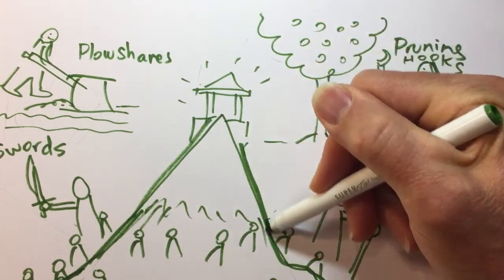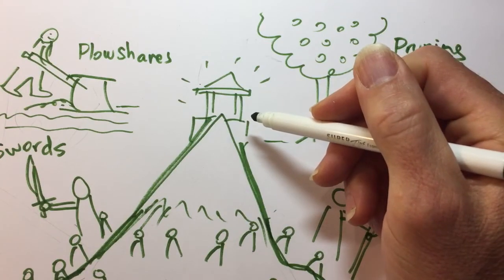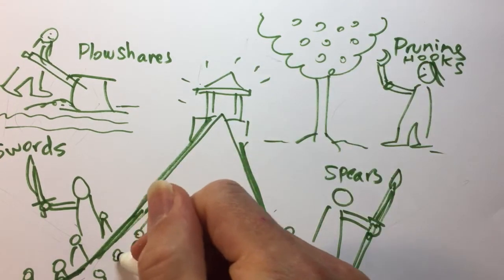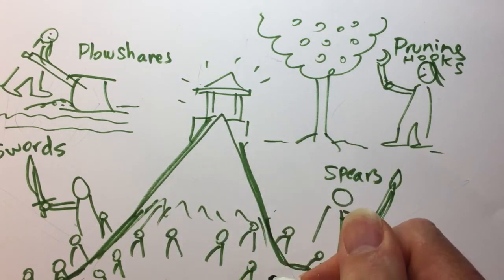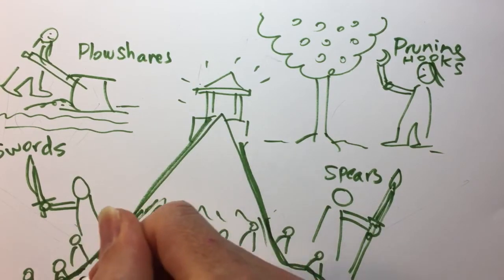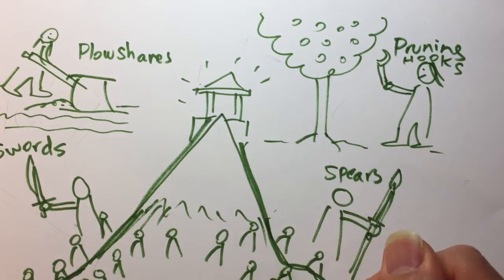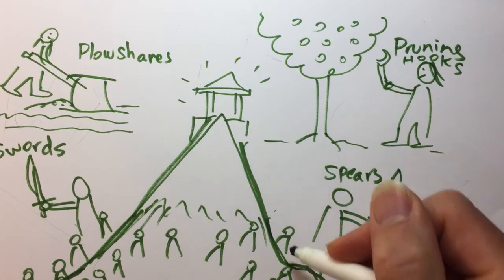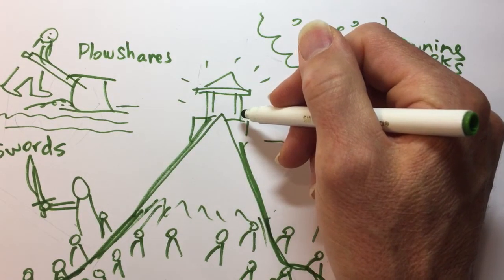The mountain on which the Lord's temple stands will become the most important of all mountains. It will be raised above the hills and people from all nations will come streaming to it. Many nations will come and say, come, let us go to the temple of the Lord. Go to the mountain of the Lord. Let us go to the temple of God and God will teach us his ways and will obey his teachings.